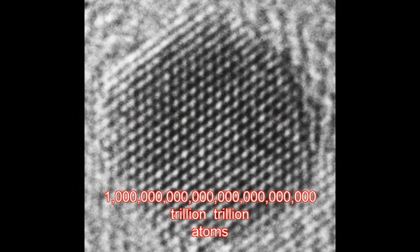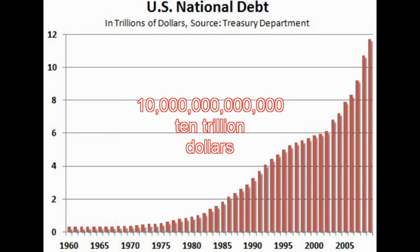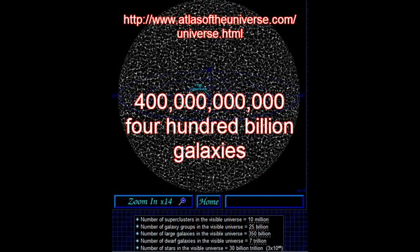Think parks. There is about a trillion trillion gold atoms in a cubic meter of gold. The US has over 10 trillion dollars of debt. There are about 400 billion galaxies in the universe, which is about 15 billion years old.